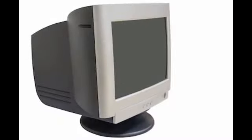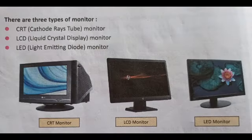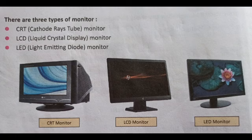The second part is the monitor. A monitor is an output device, also known as a visual display unit (VDU). The data fed into a computer can be displayed on the monitor, and the result shown by it is called the soft copy. There are three types of monitors: CRT (cathode ray tube) monitor, LCD (liquid crystal display) monitor, and LED (light emitting diode) monitor.